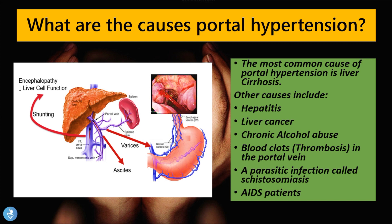What are the causes of portal hypertension? There has to be some sort of problem within the liver that causes the flow to become obstructed. If the liver is sick in some way it will prevent the blood from passing smoothly into its various channels. The most common cause of portal hypertension is liver cirrhosis — a very cirrhotic or fibrotic liver will cause great difficulty in blood flow, resulting in portal hypertension.